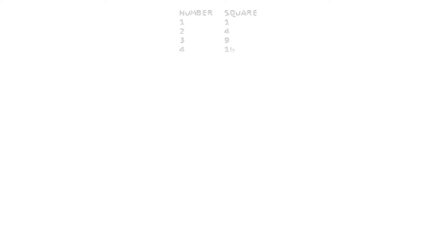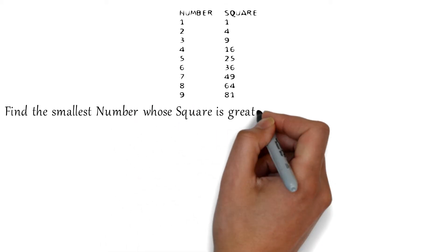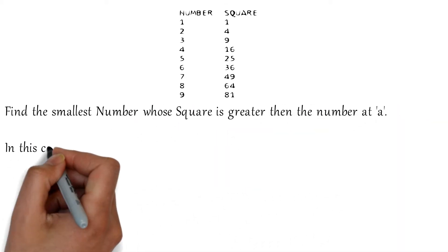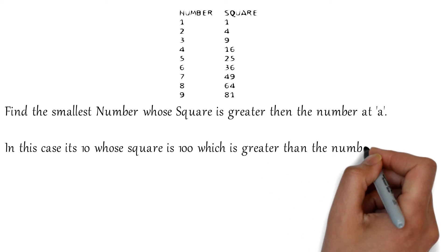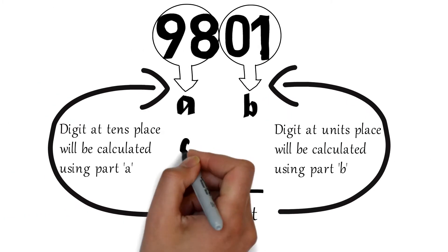The digit at the tens place will be equal to the number preceding the number whose square exceeds the number at a, which is 98. The number preceding the smallest possible number whose square is greater than 98 is 9. Thus the digit at the tens place will be 9.